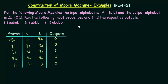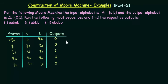In this lecture we will be seeing another example of Moore Machine. This example is not about construction of Moore Machine, but here we are already given a Moore Machine and we will try to pass some inputs to it and see what kind of outputs it gives. The input alphabet is sigma equal to AB and the output alphabet is delta equal to 01. We will run the following input sequences and find the respective outputs. In this example we will not draw the transition diagram, but from the transition table itself we will try to find out how it works.